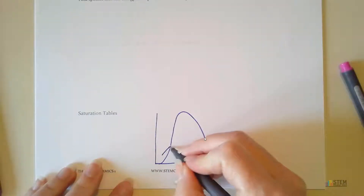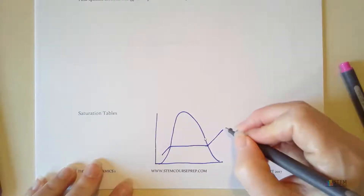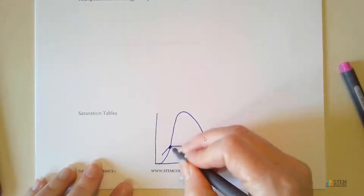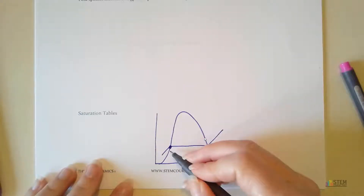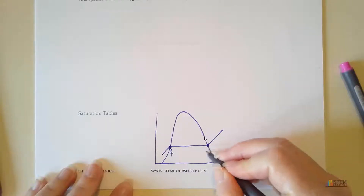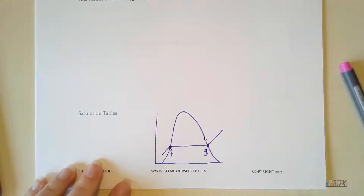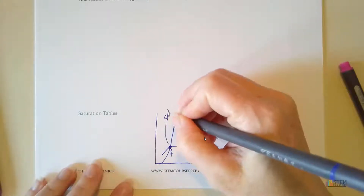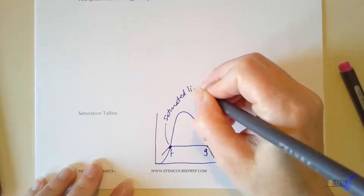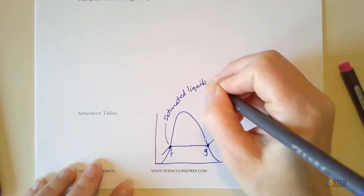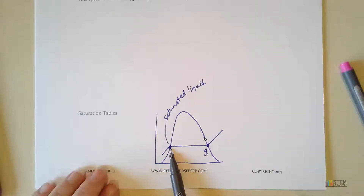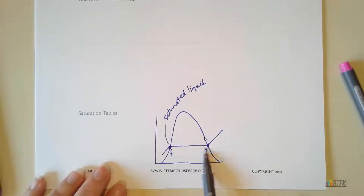Remember the vapor dome? We've got this constant pressure line, or the isobar right here. Where this isobar intersects the vapor dome, we're going to call that point F. This point over here is G. Now at F, this is where we had saturated liquid. If we have the term saturation or saturated, that means we're about to have a phase change. So this is where we still had liquid water, but it is just about to start to vaporize. Boiling is about to start.